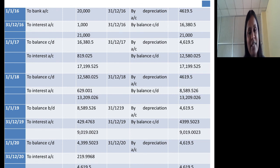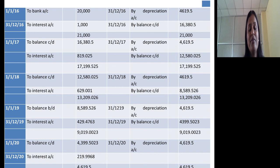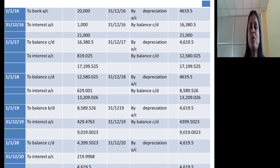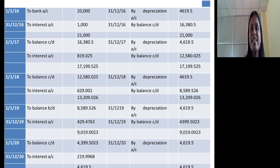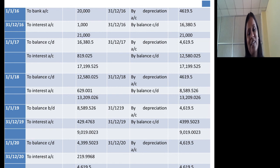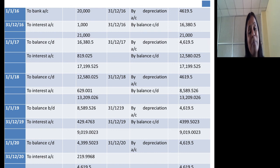In case they ask you to prepare the interest account, the asset account should be debited and the interest account should be credited every year, and every year it should be closed by transferring it to the profit and loss account. In case they ask you to prepare the depreciation account, the depreciation account should be debited and the asset account should be credited every year, and it should be closed by transferring to the profit and loss account. This is all about the annuity method of charging depreciation. We will see the remaining aspects of this module in the next session. Till then, take care of your health. Thank you.